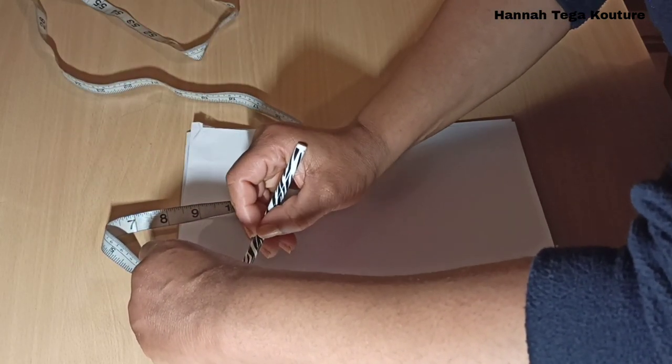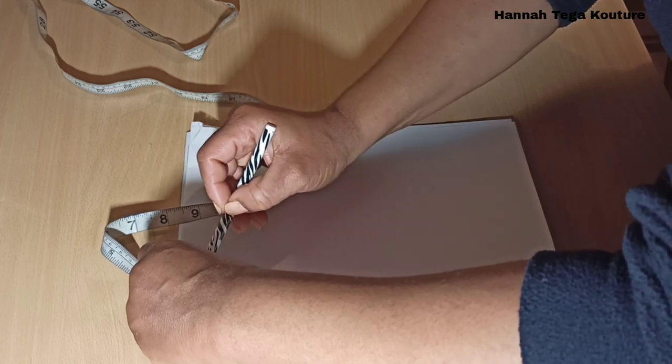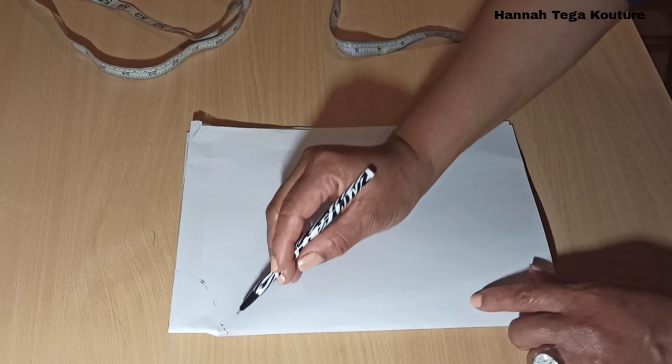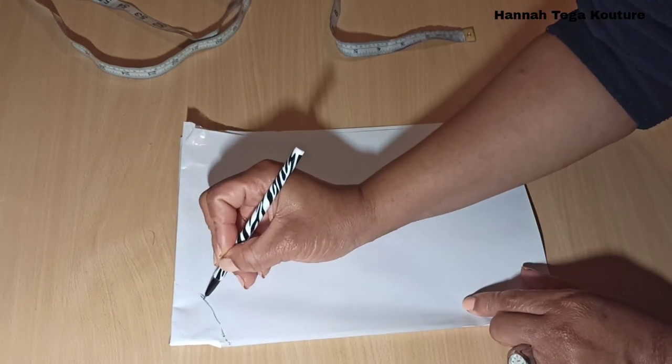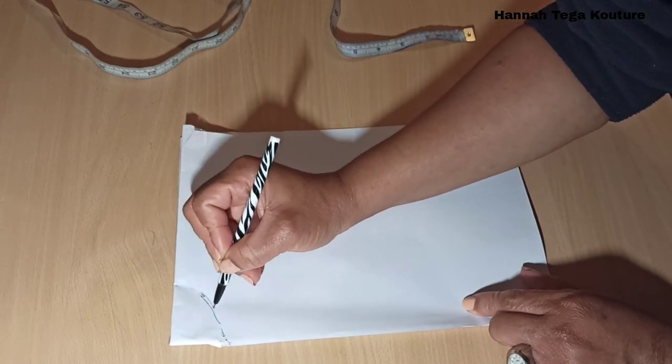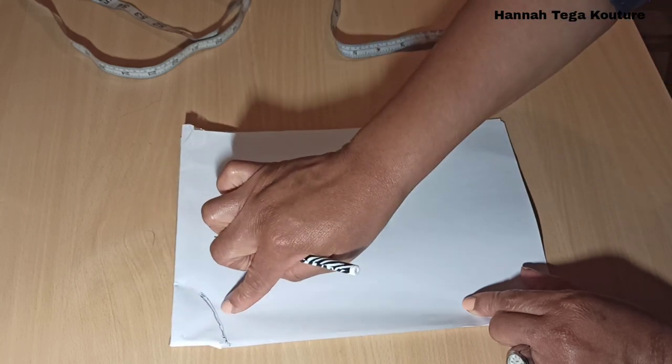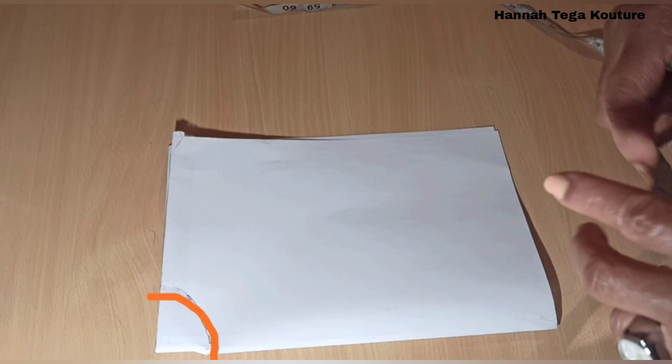Because of the cellotape I've applied to the paper, I'm not able to make my arc properly as you can see here. The pen is just sliding off the paper. But you need to make sure it's properly round enough and it's a quarter of a circle. You need to have it like this.